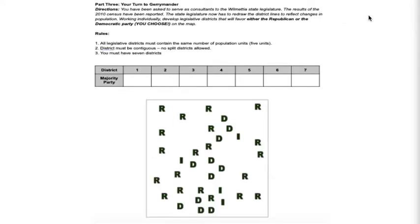Next part: your turn to gerrymander. You've been asked to serve as consultants in the Wilmettia State Legislature. The results of the 2010 census have been reported, and the state legislature now has to redraw district lines to reflect changes in population. Working individually or in groups, develop legislative districts that will favor either the Republican or Democratic Party — you choose on the map. All legislative districts must contain the same number of population units — five, just like the last activity. Districts must be contiguous, meaning connected — even if it's a narrow connection, it must be connected. And you must have seven districts.